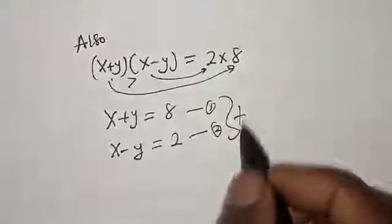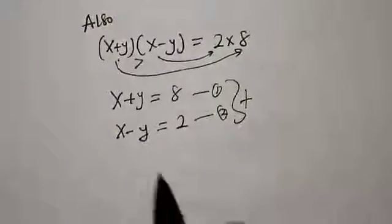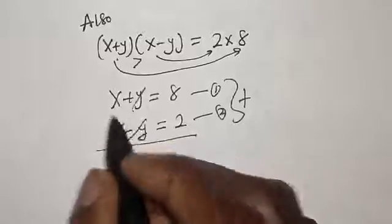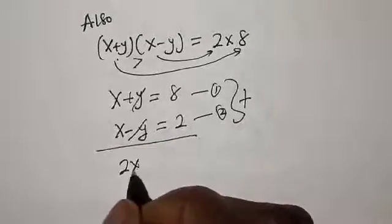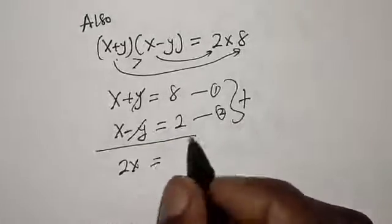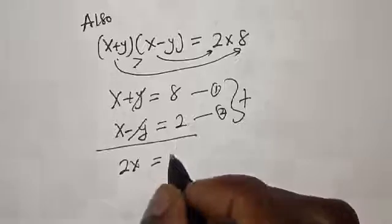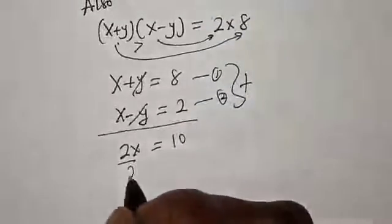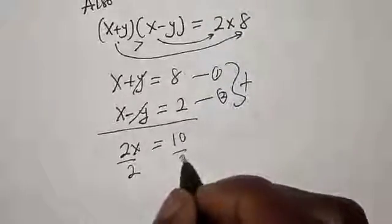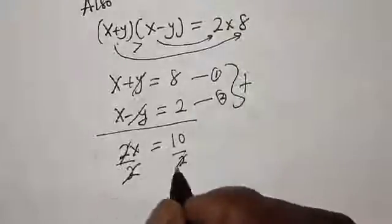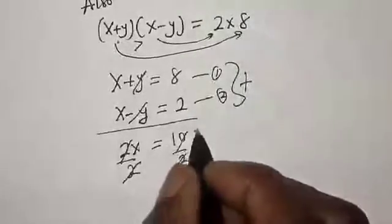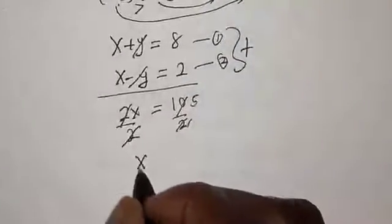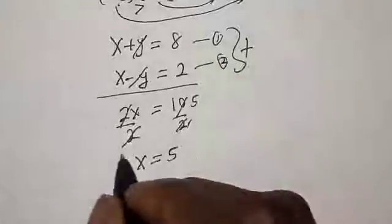Let's add the two equations together. The y terms cancel. We have 2x equal to 8 plus 2, that is 10. Dividing both sides by 2, we get x is equal to 5.